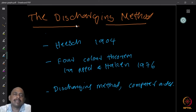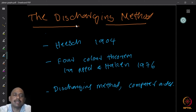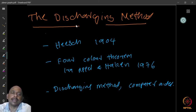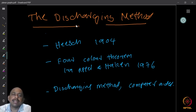This result was used very little for maybe around 50, 60, or 70 years. After this, it was used in a very famous paper by Appel and Haken, who proved in 1976 a very long-standing conjecture called the four-color conjecture.